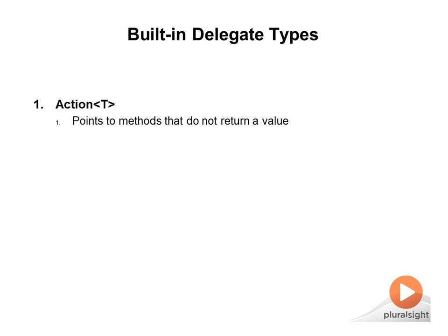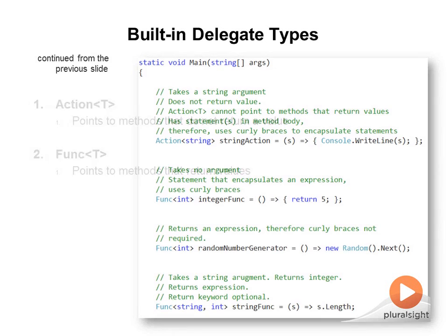As the final segment of this video, I introduce two built-in delegate types in the .NET Framework: Action, which can point to methods that accept arguments but do not return values — with multiple overloads for the number of arguments — and Func, which points to methods that return values, again with many overloads based on the number of arguments. With these delegate types in place, the steps to create and use delegates are even further simplified, as there is no longer a need to create a new delegate type.